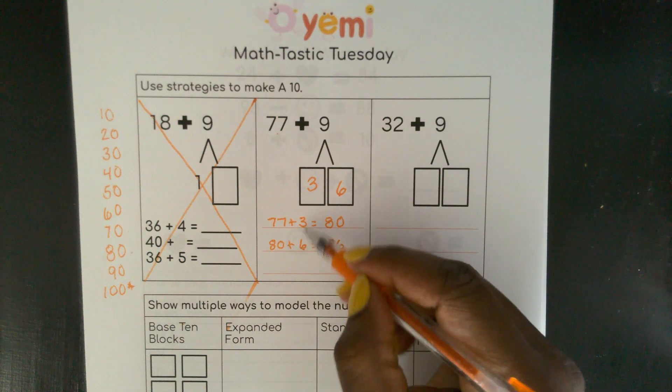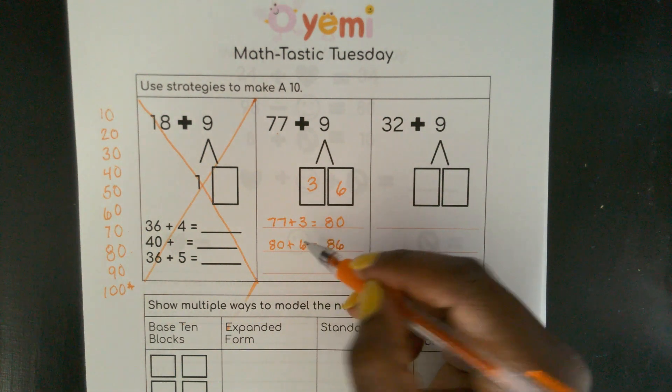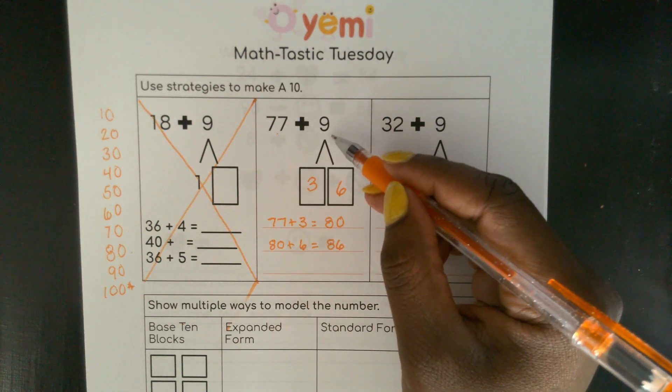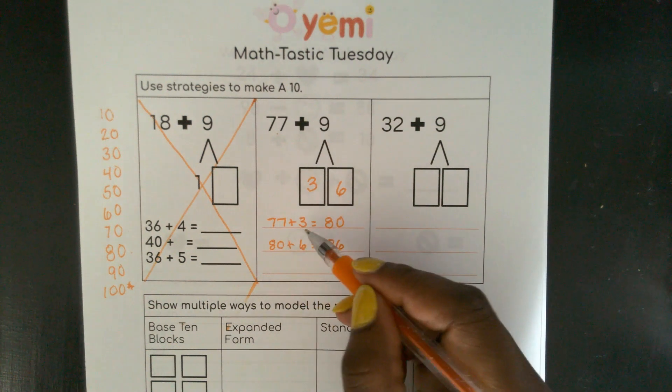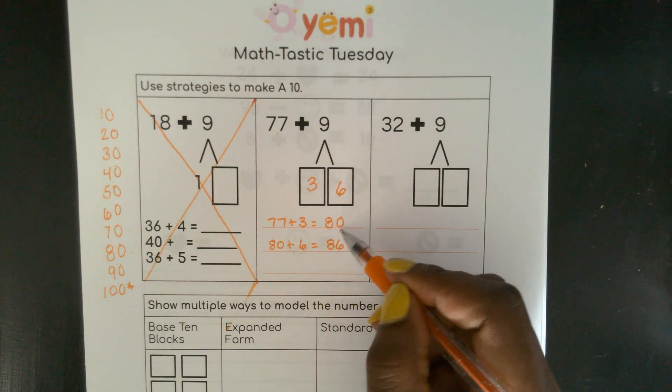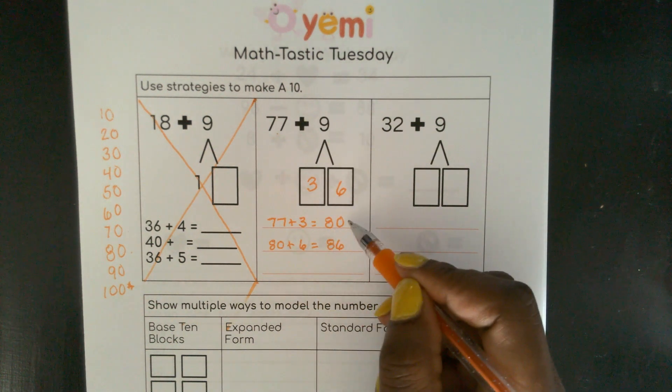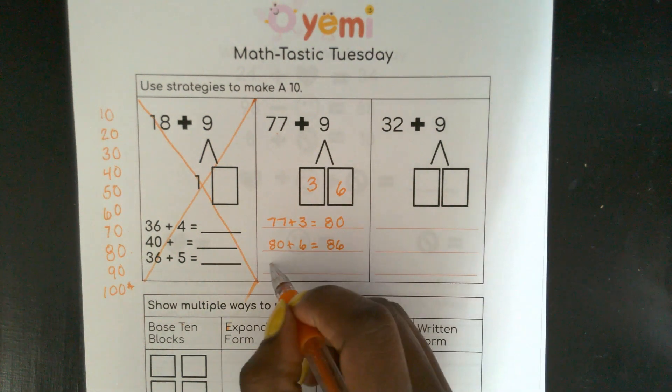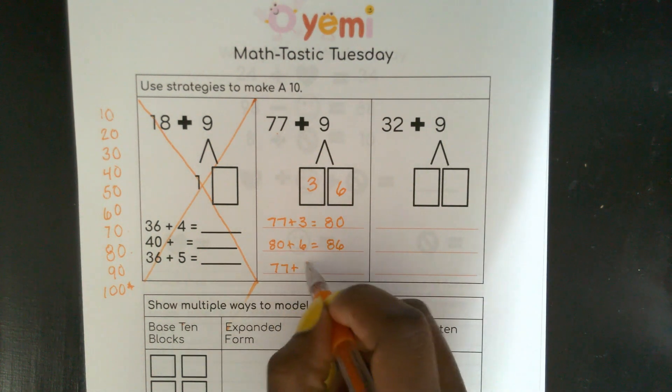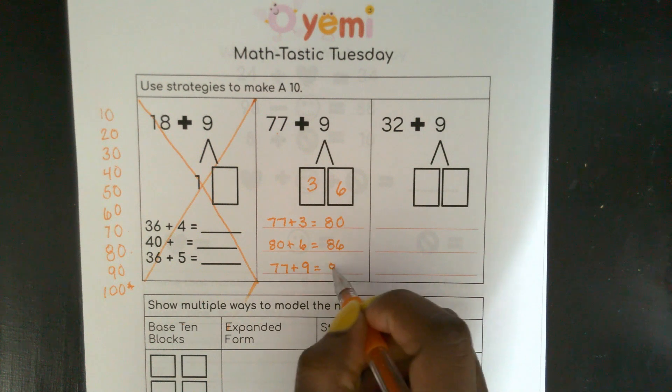Remember, 6 plus 3, this is what I needed to make that 9. 77 plus 3 is what I needed to make my next 10. So now I know that 77 plus 9 equals 86.